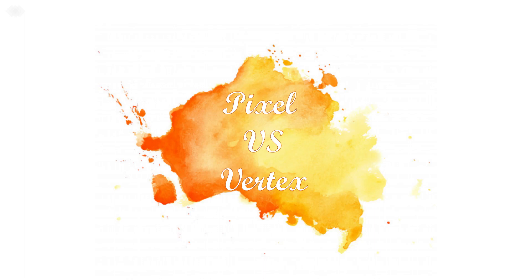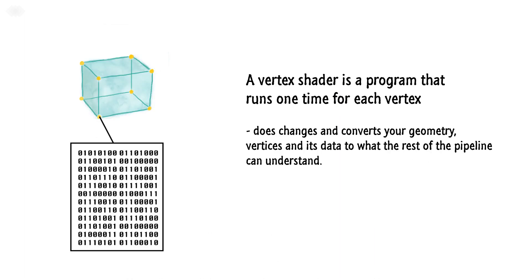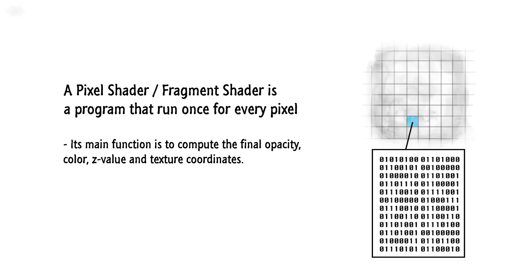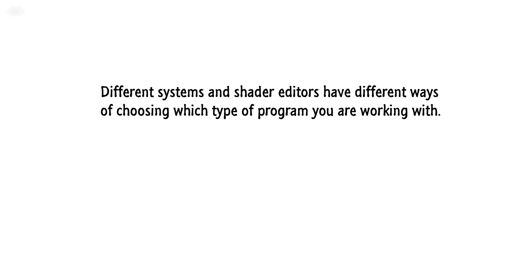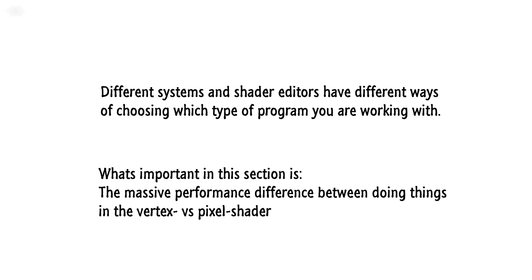Pixel versus vertex shader. A vertex program is a program that runs once per vertex — it does changes and converts your geometry, vertices, and its data to what the rest of the pipeline can understand. A pixel shader, or fragment shader as it's really called, is a program that runs once or even multiple times per pixel; its main function is to compute the final opacity, color, depth value, and texture coordinates. Different systems and interfaces have different ways of choosing which type of program you're working with inside the shader, and some even do this automatically. What's important here is the massive performance difference between doing things in the vertex program versus the pixel program.